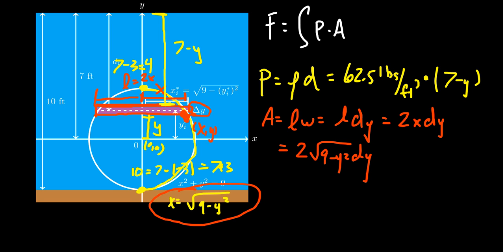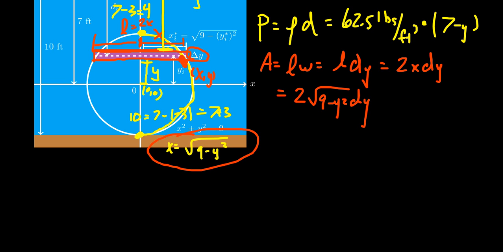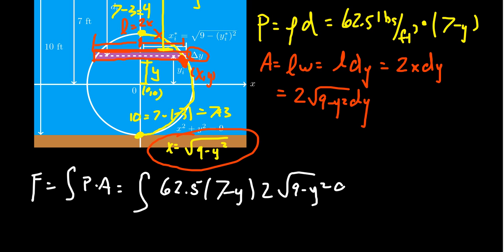Our force, like we said before, is the integral of pressure times area. Pressure is going to be 62.5 times 7 minus y. The area is 2 times the square root of 9 minus y squared dy. In terms of integration, we can go from the top of the circle, which is y equals 3, to the bottom of the circle, which is y equals negative 3.